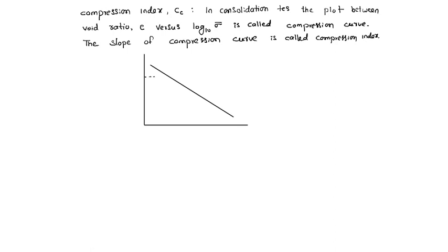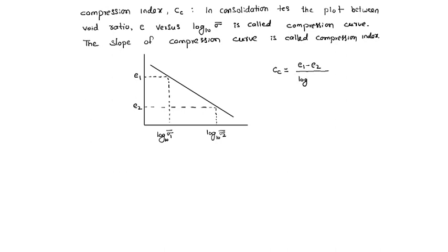Now suppose this is E1 and this is sigma 1 bar log, and this is void ratio E2 at stress sigma 2 bar. Then the slope is called compression index, so cc equals the change in void ratio, that is E1 minus E2, divided by log(sigma 2) minus log(sigma 1), that is log(sigma 2 / sigma 1).